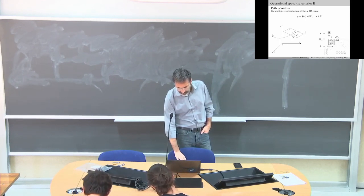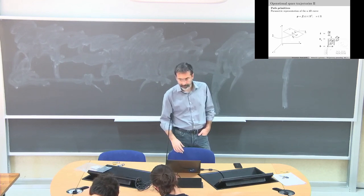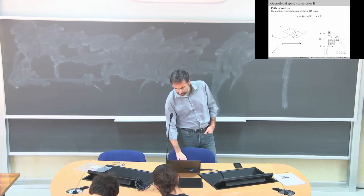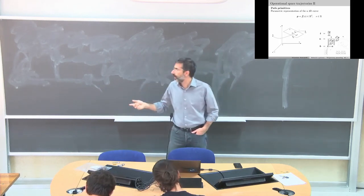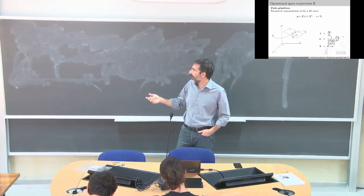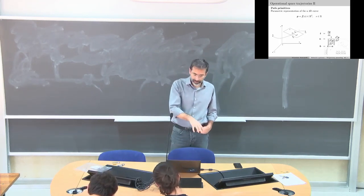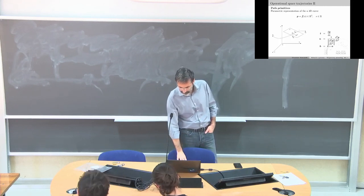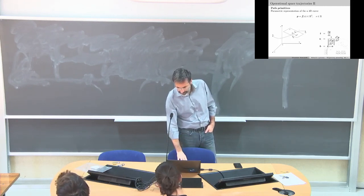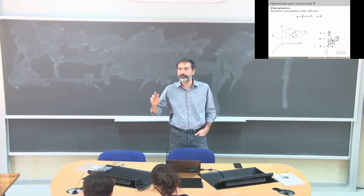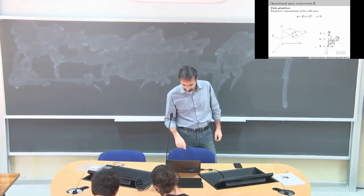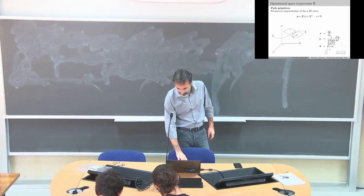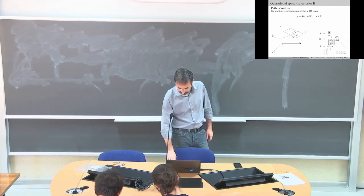Then I have the normal direction, given by the second partial derivative with respect to S, normalized with respect to its norm, because this is a unit vector. And then I have simply the closure of the frame, so B is equal to T cross N.